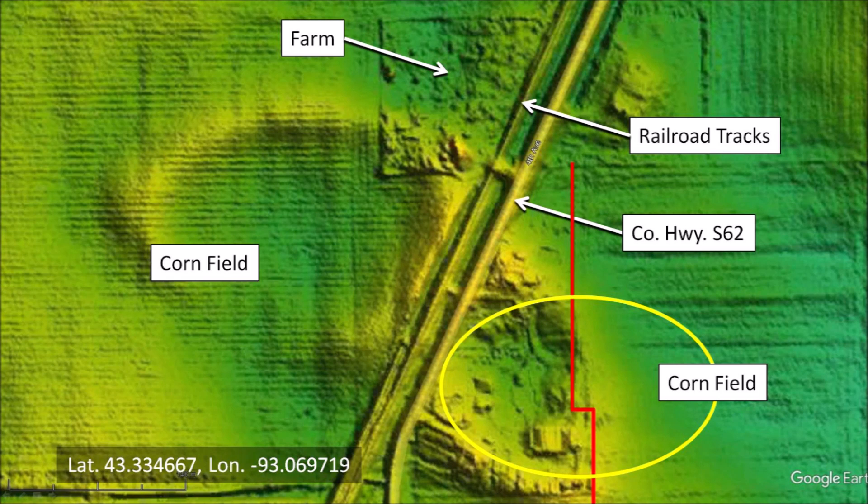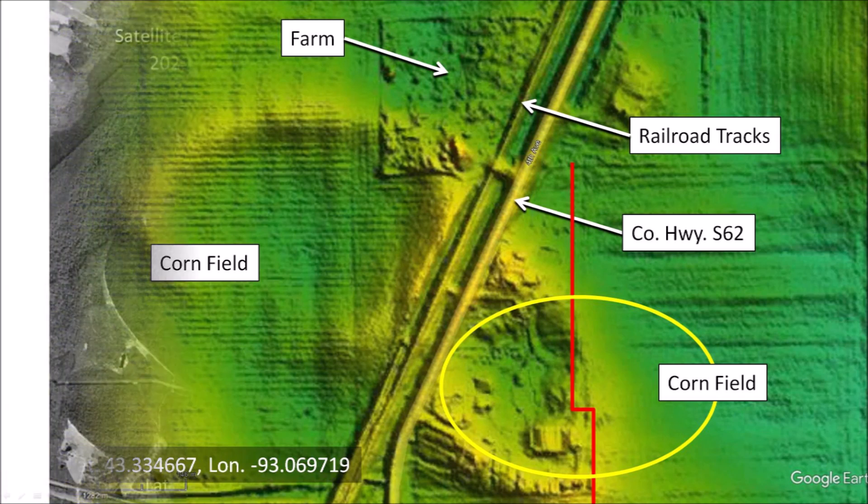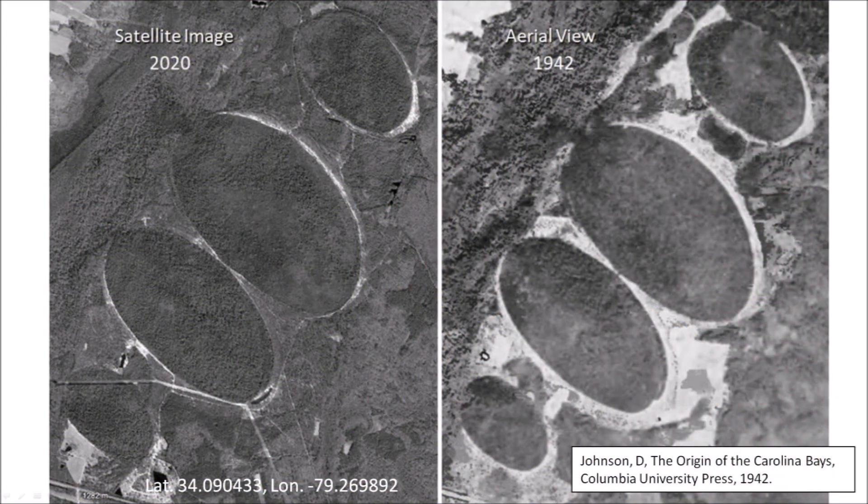The ease with which the Carolina Bays can be destroyed is a clue that they must be of recent geological origin. There are multiple lines of evidence indicating that the bays formed toward the end of the Ice Age in the late Pleistocene epoch. A slide comparing the satellite image from 2020 and an aerial view published by Professor Douglas Johnson in 1942 illustrates that the sand rims are disappearing. This degradation has happened even in the protected area called the Little P.D. Heritage Preserve.